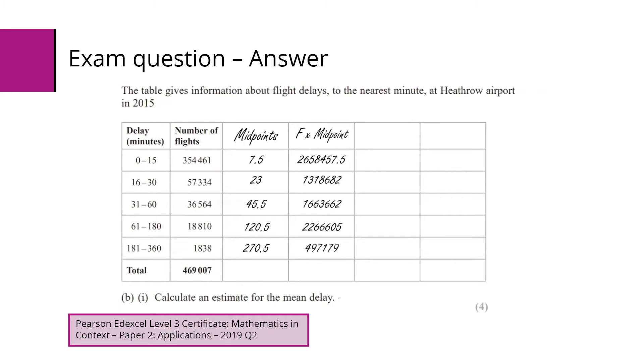Then we want the sum of all of those, which is just over eight million. So our estimated flight delay is the total number of minutes that we think they were delayed by divided by the total number of flights, which is 17.91996 or 17.9.